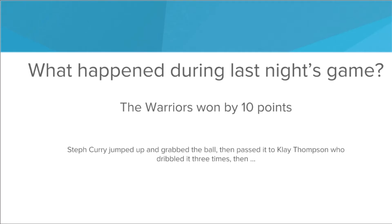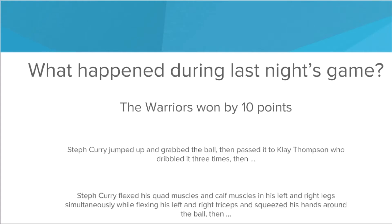But to be honest we could go even deeper. Things like jumped up and grabbed the ball — those are pretty complicated processes in and of themselves. So really you could say, oh what happened during last night's game? Well first Steph Curry flexed his quad muscles and calf muscles in his left and right leg simultaneously while flexing his left and right triceps and squeezed his hands around the ball... but this is insane. You're providing so much detail about the muscles flexing in his body when all I asked about is what happened during last night's game. This level of detail is not appropriate for the conversation.